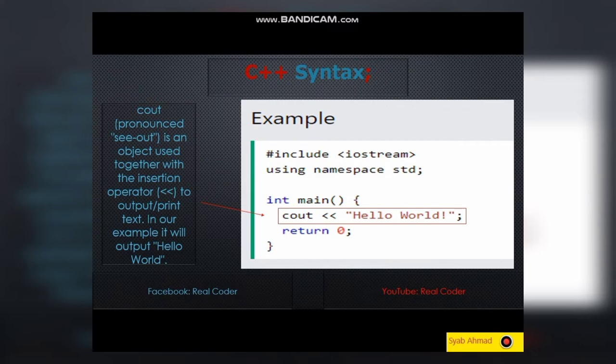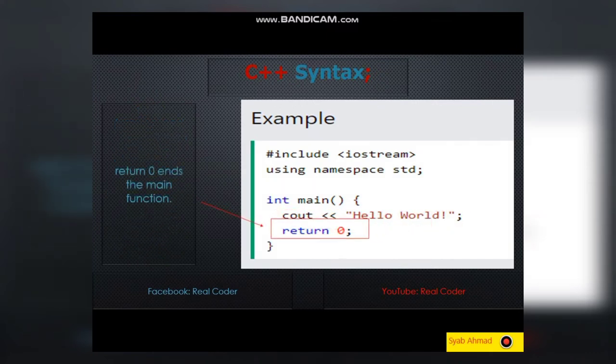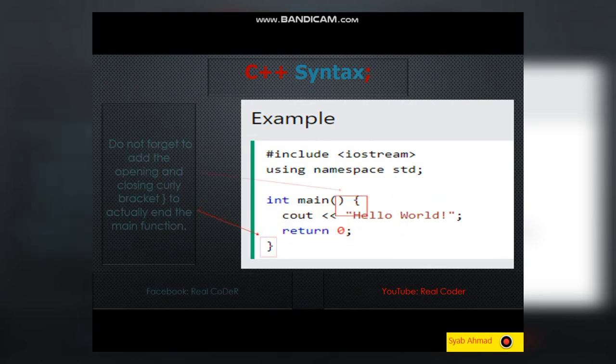Every C++ statement ends with a semicolon. Remember, the compiler ignores white spaces. However, multiple lines make the code more readable. Return 0 ends the main function. Do not forget to add the opening and closing curly brackets to actually end the main function.